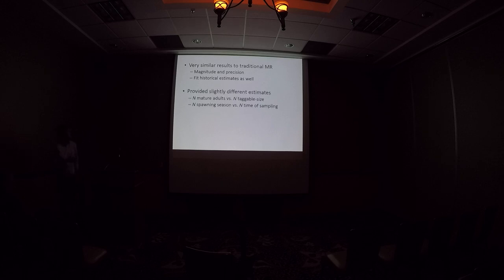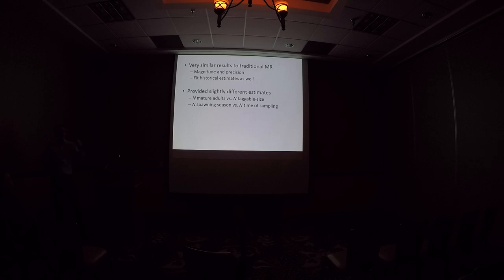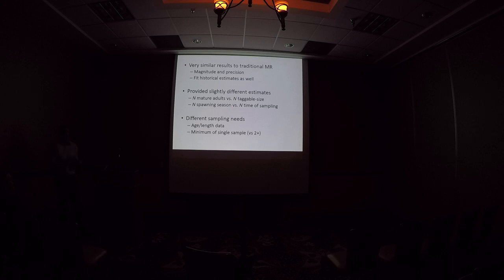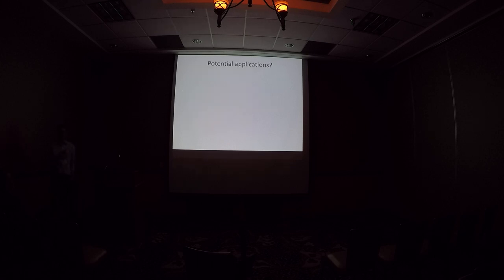To sum up: close-kin mark-capture gives very similar results to traditional mark-recapture, with slightly different estimates — you're getting the number of mature adults as opposed to the number of taggable-sized fish. That's a useful number to know. It's indexed to the spawning season rather than the moment you were sampling. You do need age or length data, but the minimum is a single sample — unlike traditional mark-recapture where you need at least two capture occasions. In close-kin mark-capture, your captures and your recaptures — your juveniles and their parents — are in the same sample.